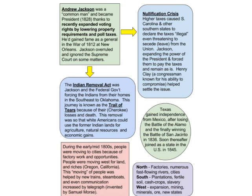Regionally: in the North there were lots of factories, fast-flowing rivers, and cities. In the South there were plantations, fertile soil, cash crops, and slavery. In the West there was expansion, mining, minerals, ore, and because of expansion, new states.